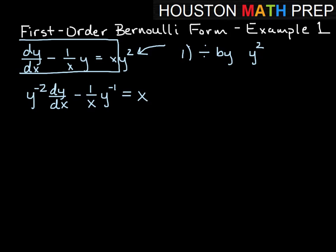And now we simply remember the second step is to make a substitution for whatever power of y we get here next to f of x. So step 2, we're going to substitute, and we'll go ahead and substitute v is equal to y to the minus 1.